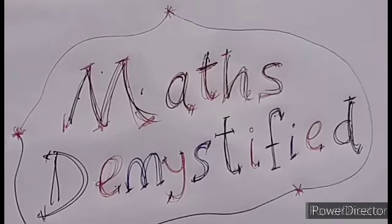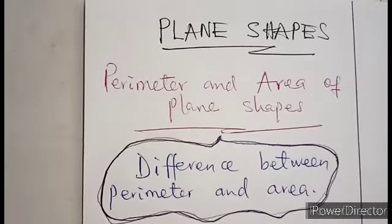This is Max Demystified. This is going to be our first series on plane shapes. So we want to deal with perimeter and area of plane shapes. I'll start with the difference between perimeter and area.